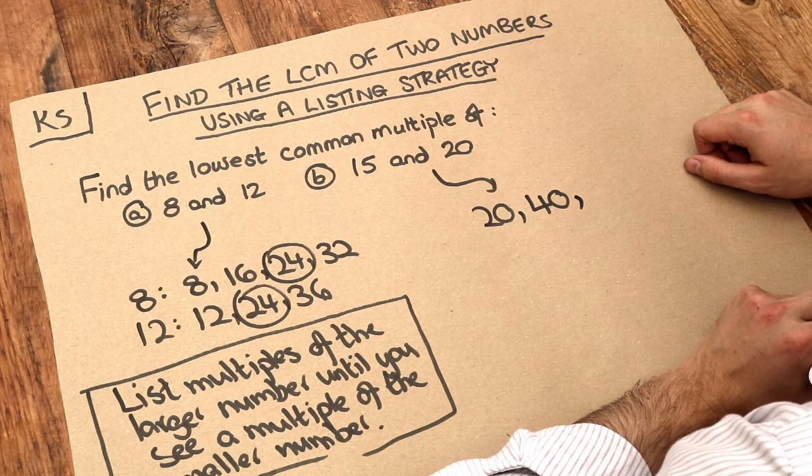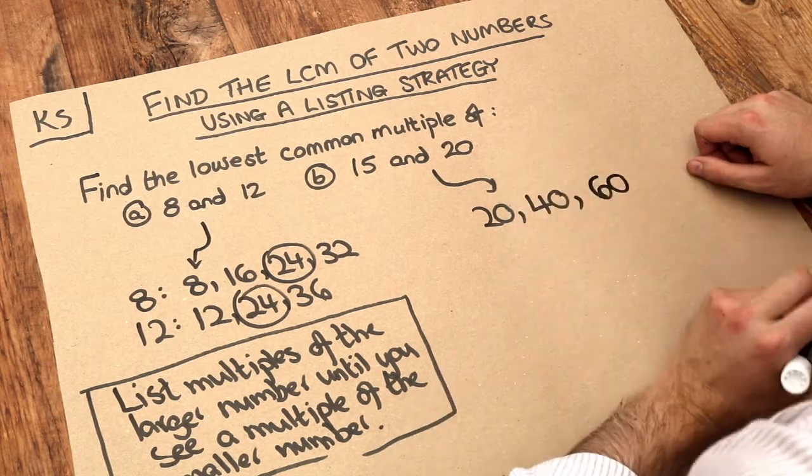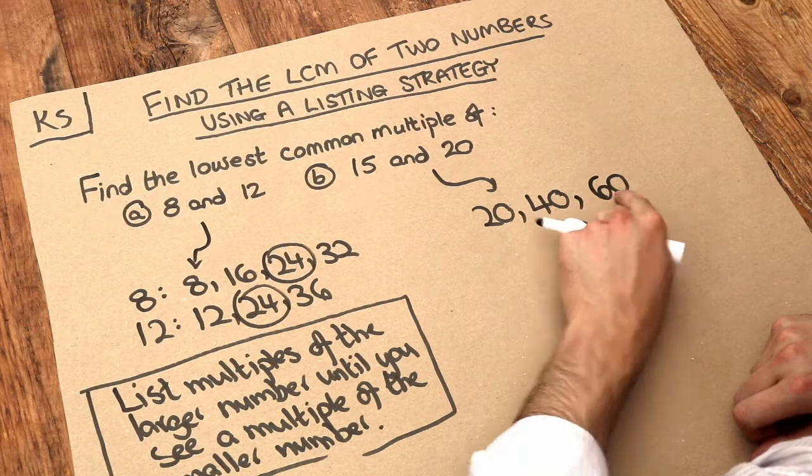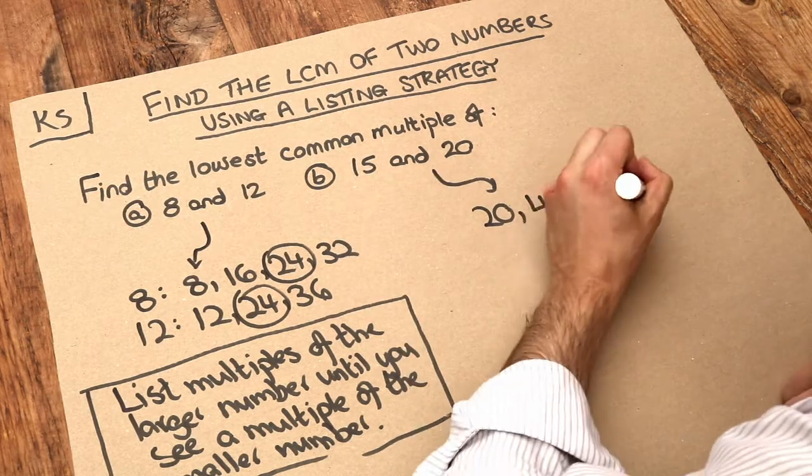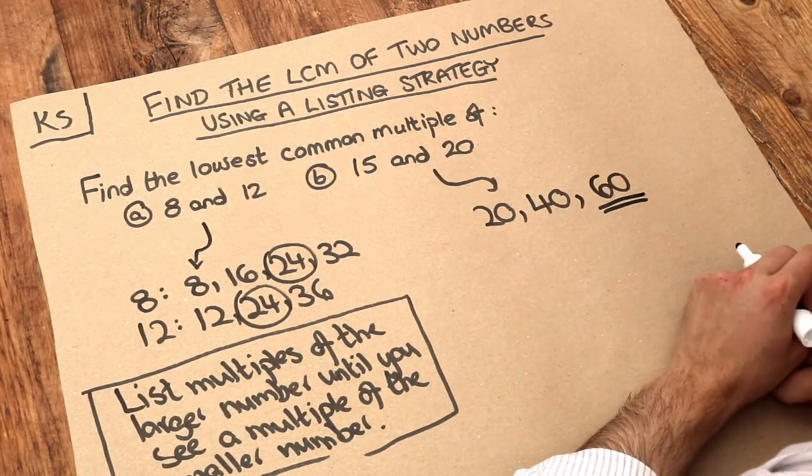What's the next multiple of 20? Well it's 60. Is 60 a multiple of 15? Yes it is. 60 is 4 times 15 and therefore that is the lowest common multiple.